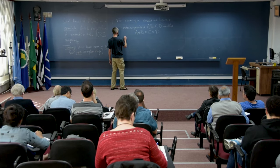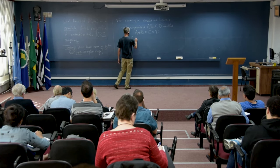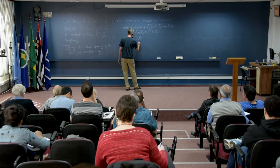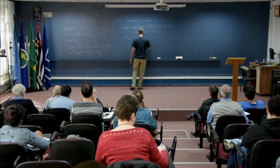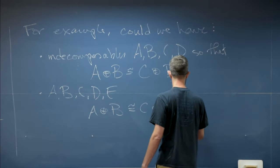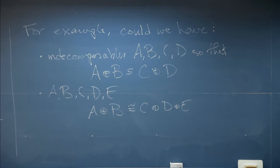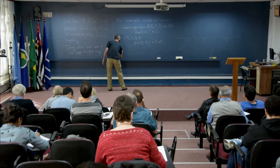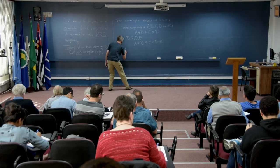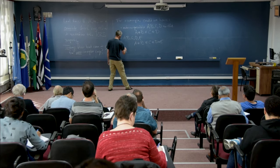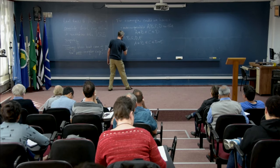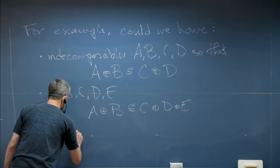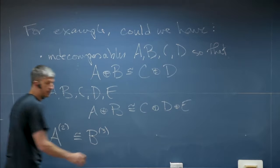Could we have, slightly worse, could we have A plus B isomorphic to C plus D plus E? Again, indecomposables. So here I'm saying that the number of indecomposable summands on each side is different. Could we have indecomposables A and B so that two copies of A is isomorphic to three copies of B?